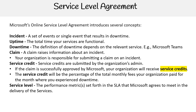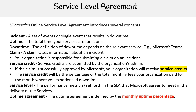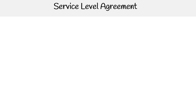Then we have service level — this is the performance metric set forth in the SLA that Microsoft agrees to meet in the delivery of services. And the last concept is uptime agreement. The uptime agreement is defined by the monthly uptime percentage, which we'll explain a bit more in the next slide.